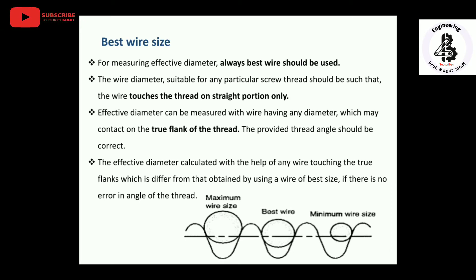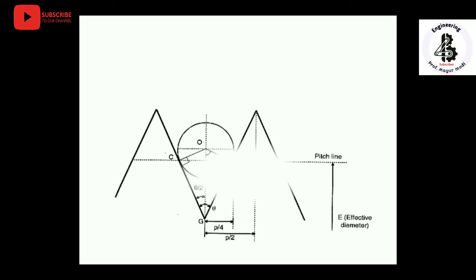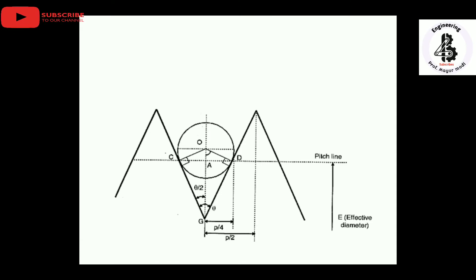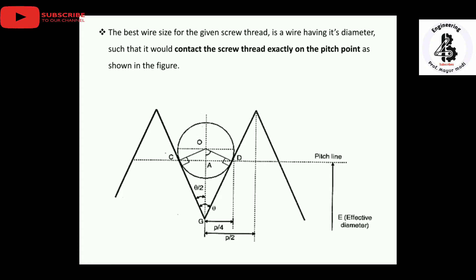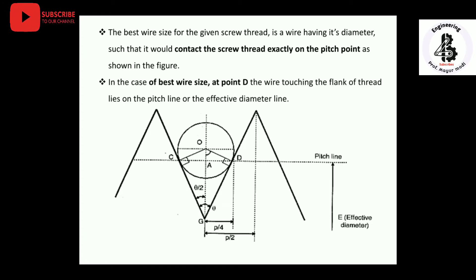Now we will see some of the geometry for the best wire size. The best wire size for a given screw thread is a wire having its diameter such that it would contact the screw thread exactly at the pitch point, as shown in the figure. In the case of the best wire size, at point D, the wire touches the flank of the thread lying onto the pitch line, which is the effective diameter.